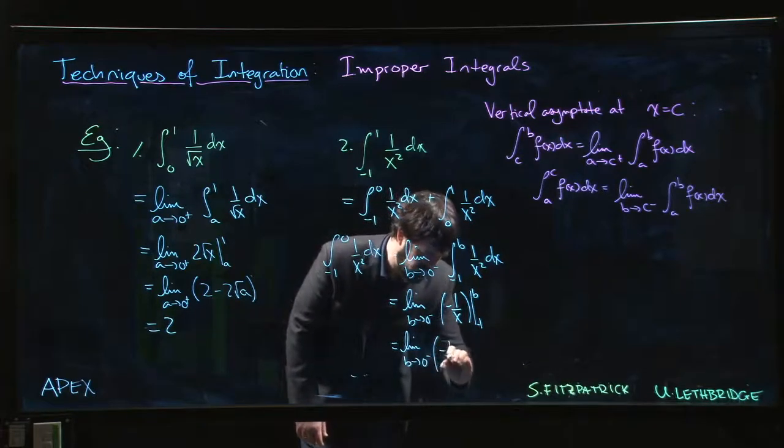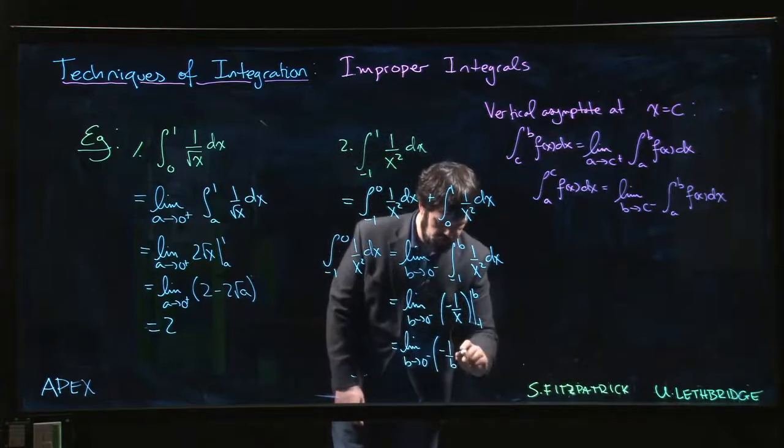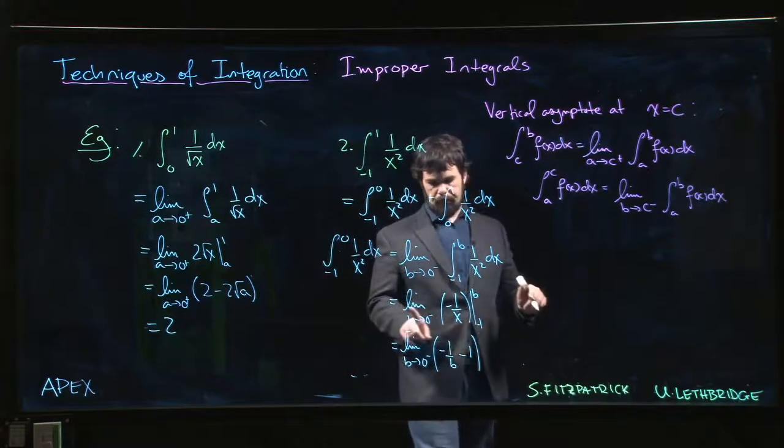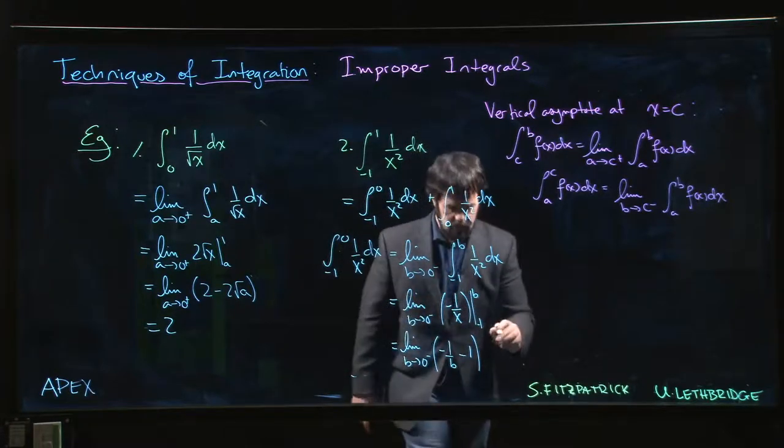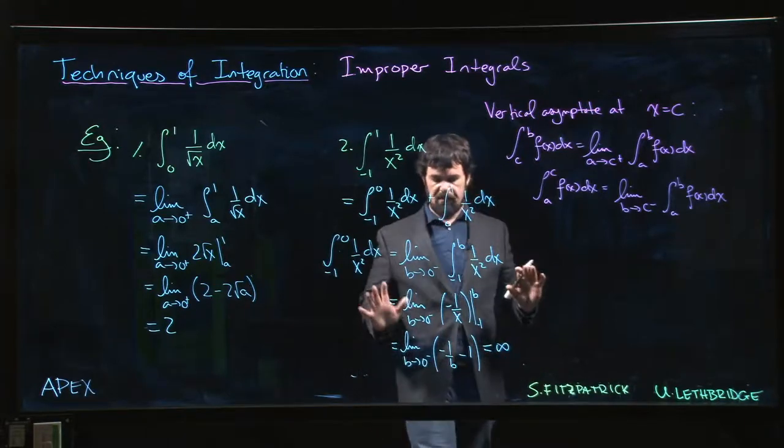So that is the limit as b approaches zero from the left of minus one over b minus minus minus, three minus signs there to deal with. And that limit comes out to be infinite.